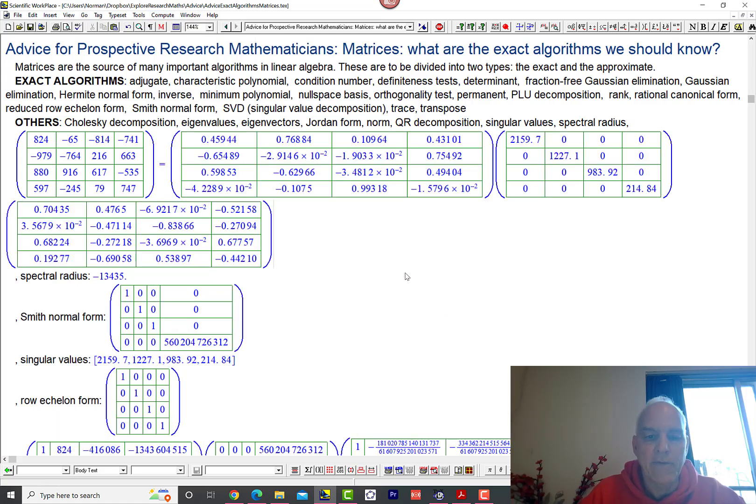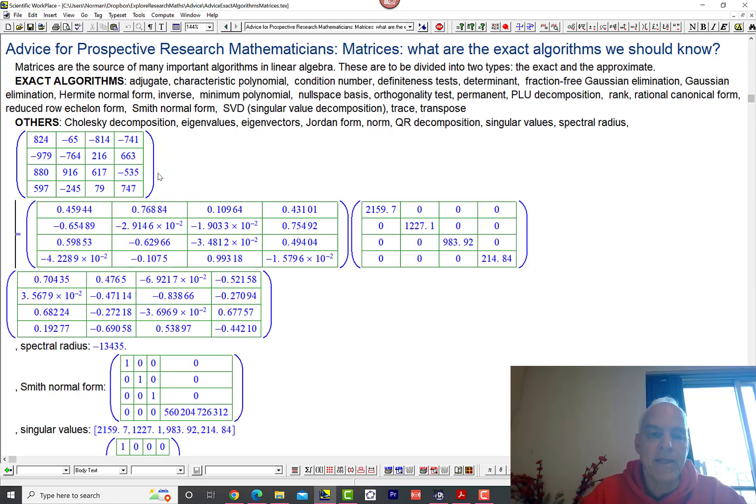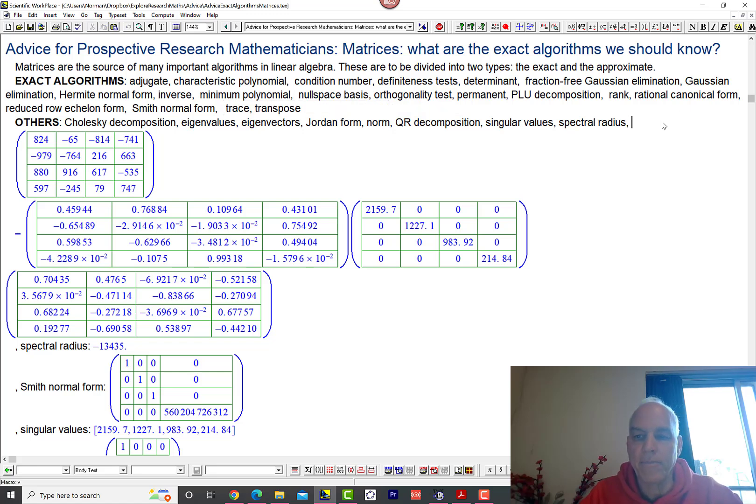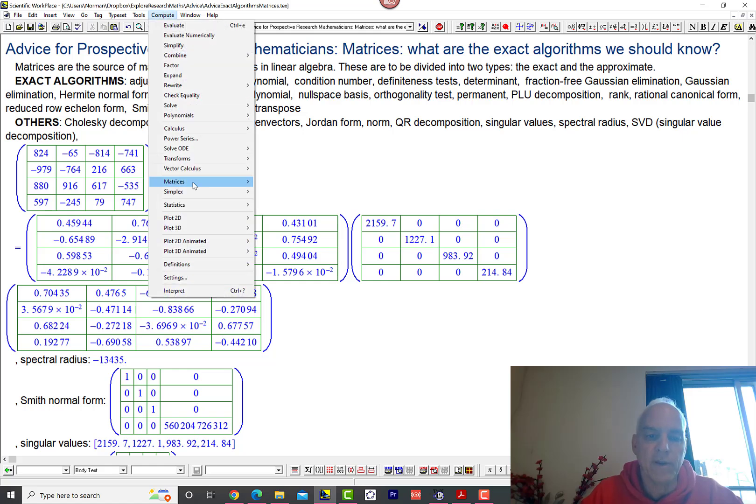Now we have the singular value decomposition. It's a bunch of matrices and a diagonal matrix. You can see that the entries are decimal numbers here, that means they're only given up to a certain amount of accuracy. That's definitely an approximate algorithm.